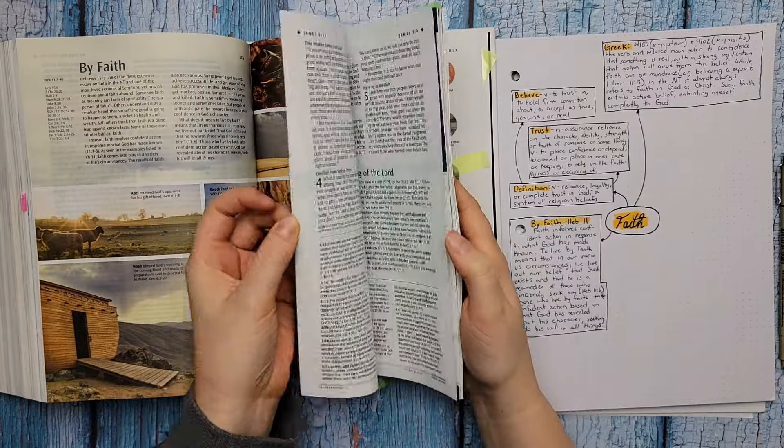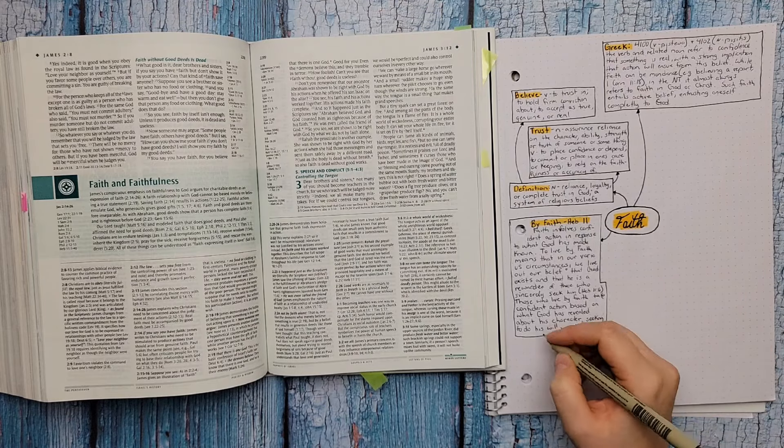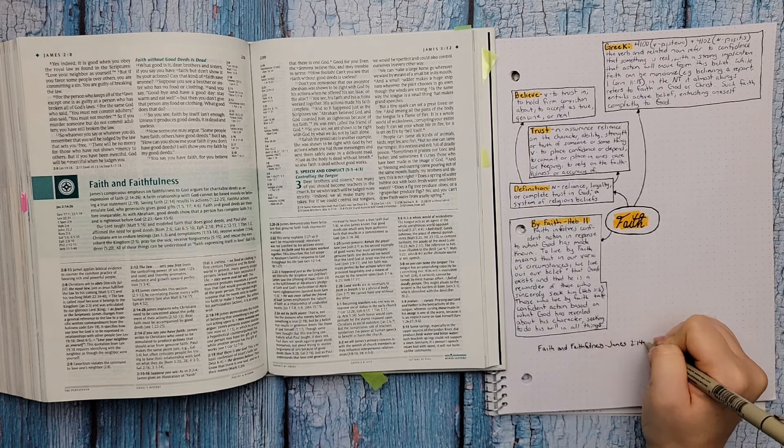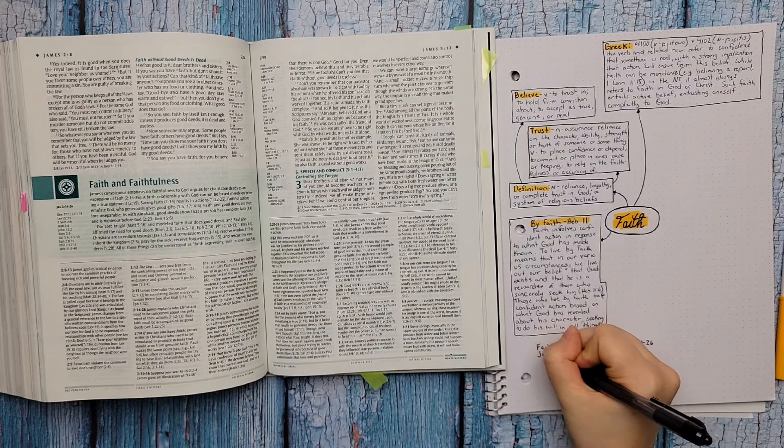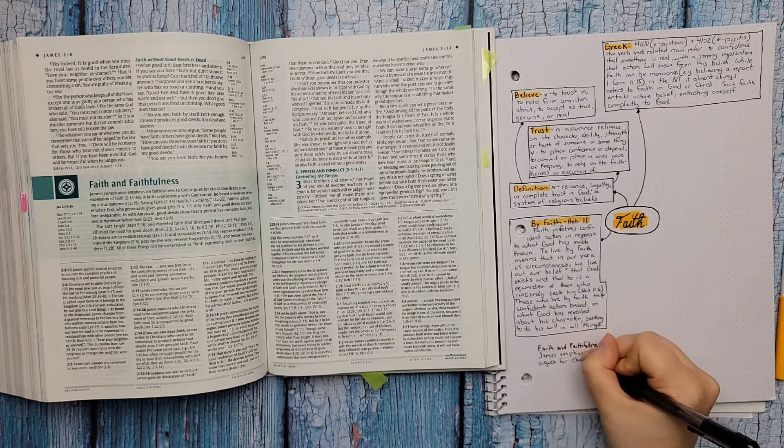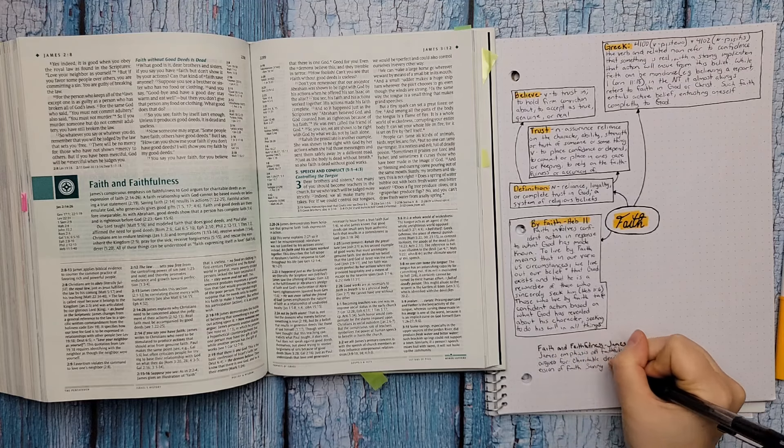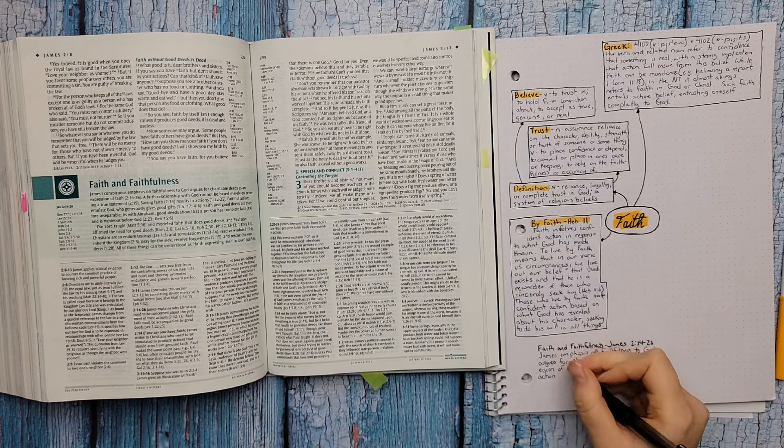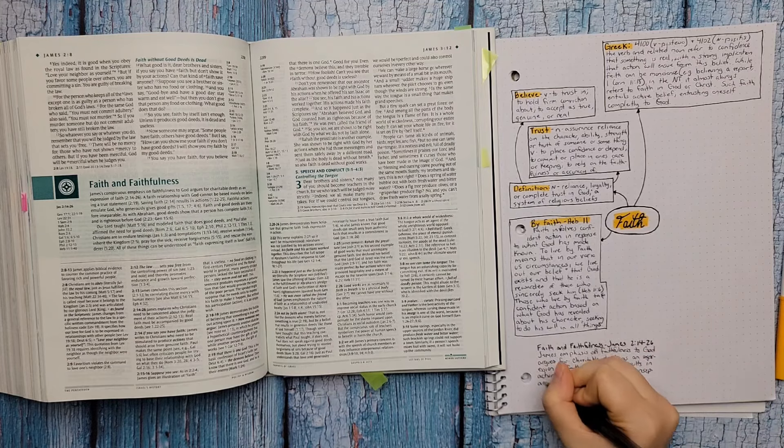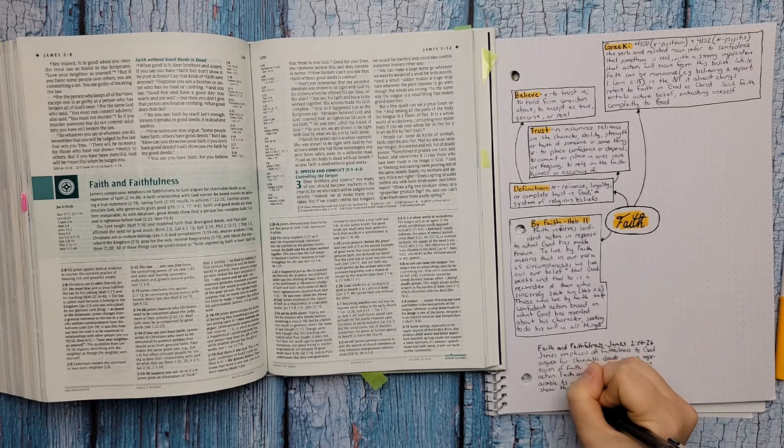The next theme is called faith and faithfulness. It's in James 2, 14 through 26. And if you've read James, you know that James really emphasizes faithfulness to God. His argument is that charitable deeds or good deeds are an expression of faith. Saving faith results in action. Faith and good deeds are inseparable. As with Abraham, good deeds show that a person has complete faith and is righteous before God. James gives Abraham as an example. God promised him to multiply his seed and his faith was counted as righteousness, which we're going to get into in a minute.